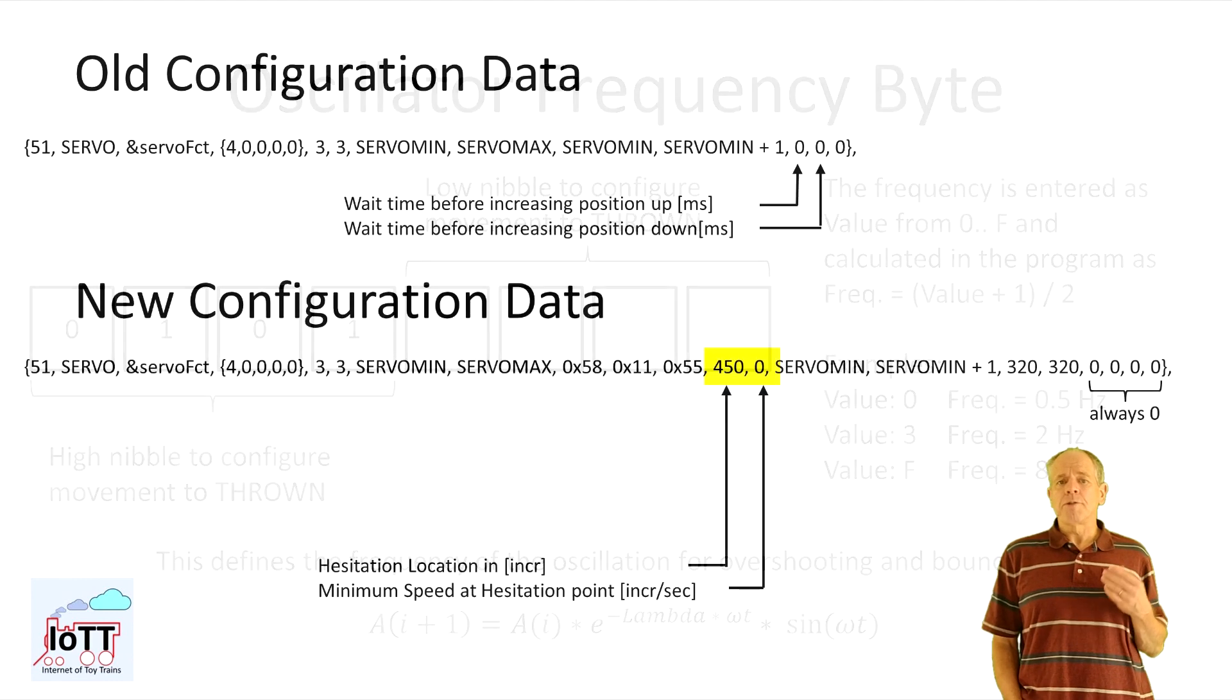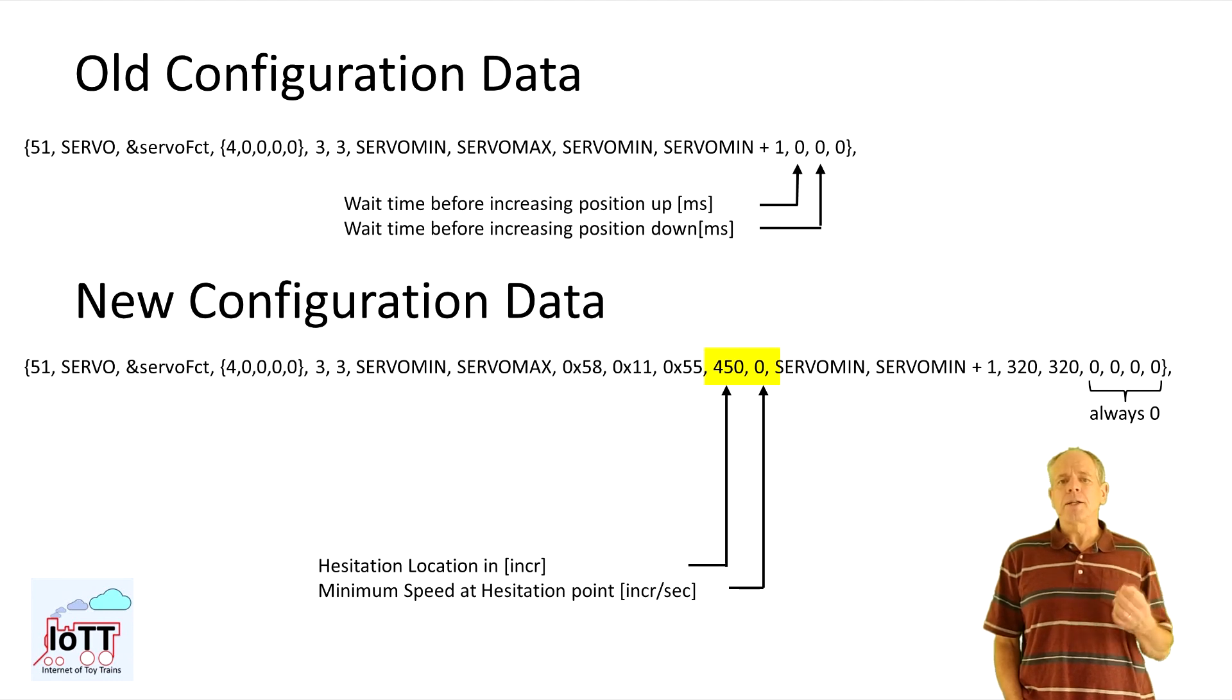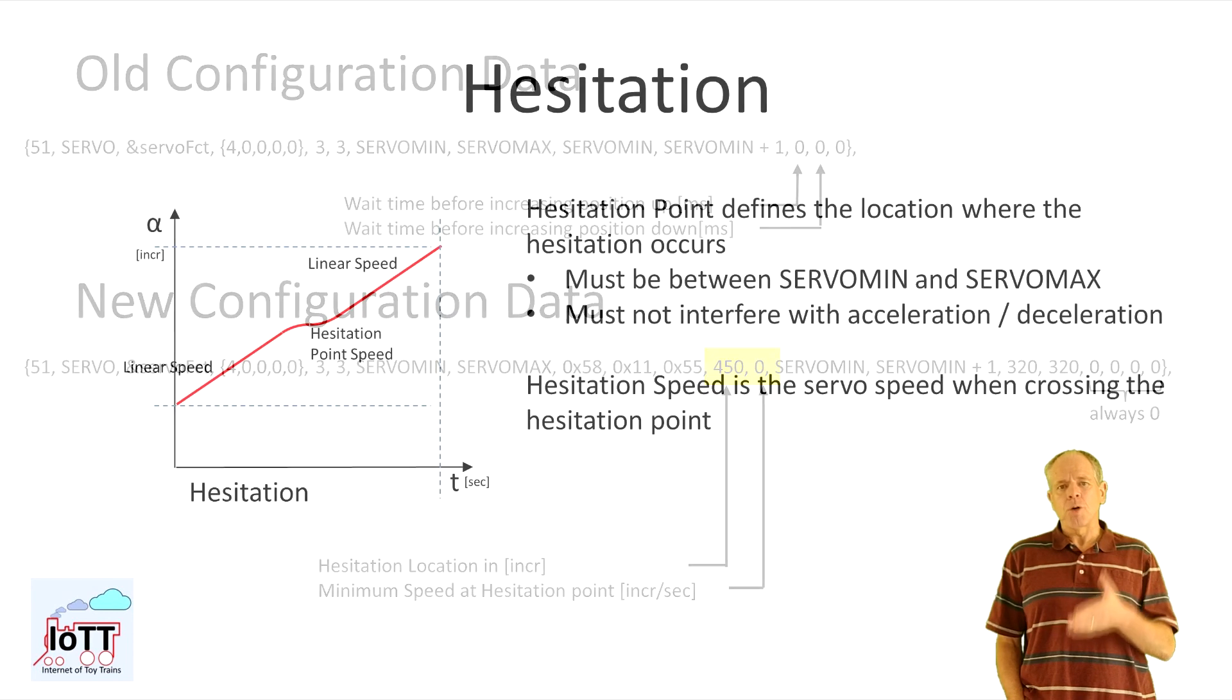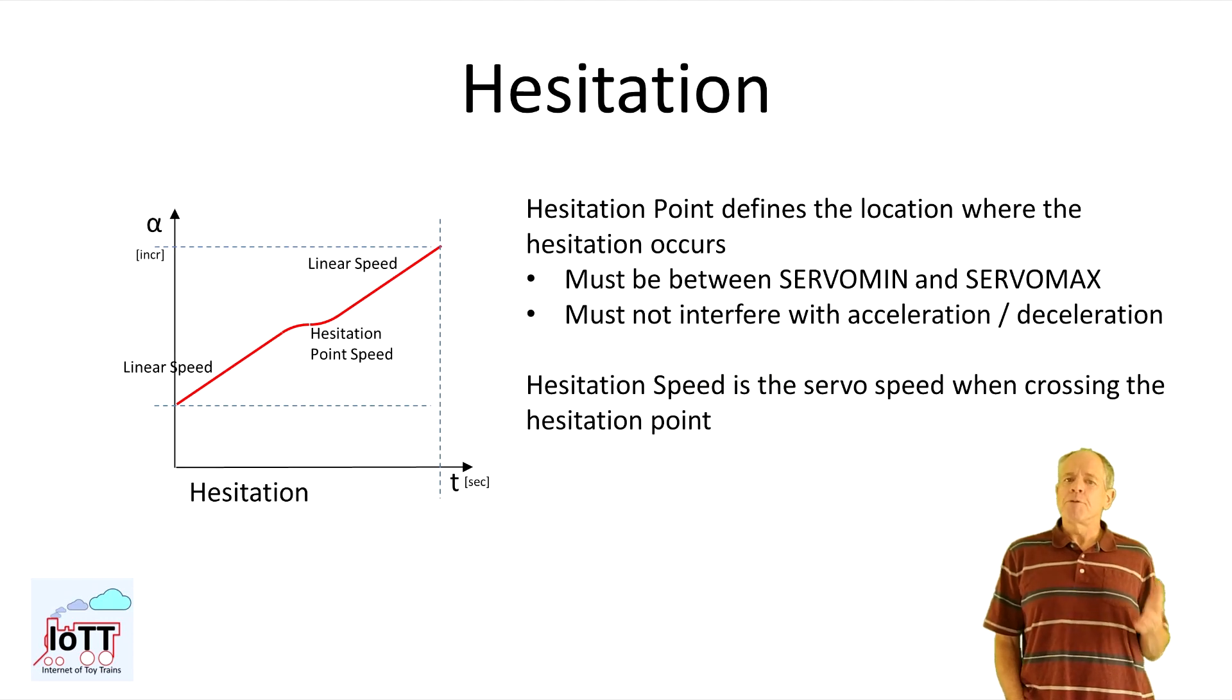The final two values define the location and the final speed of the hesitation, if configured. The location is the exact position of where the speed is at minimum. Before and after that position there is deceleration and re-acceleration. The speed at this very position is defined in the second byte.